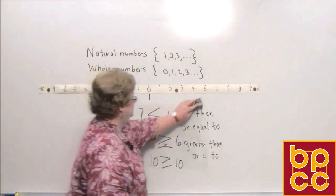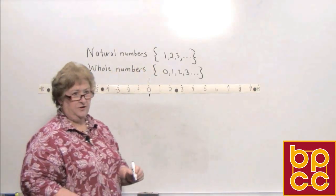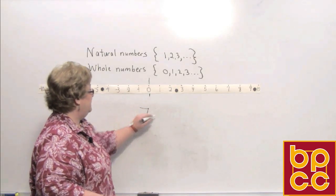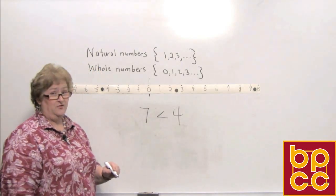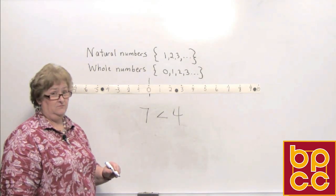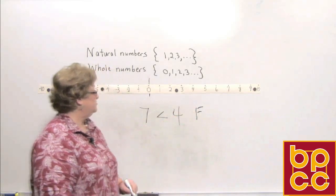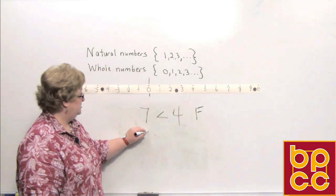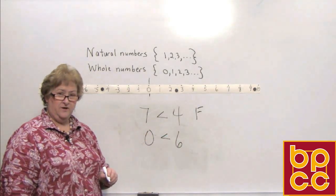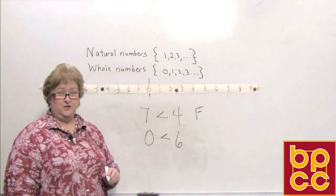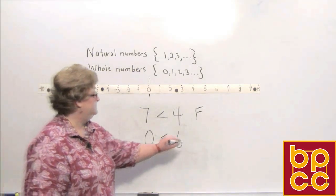Using the number line if you need to: is seven less than four? You can see that seven is to the right of four, so the statement 'seven is less than four' is false. How about: zero is less than six? Six is clearly to the right of zero on the number line, so zero is less than six — true statement.